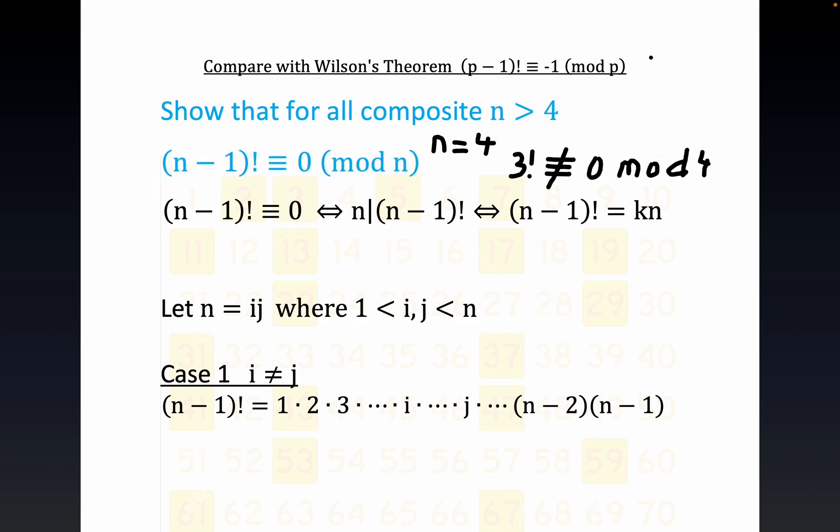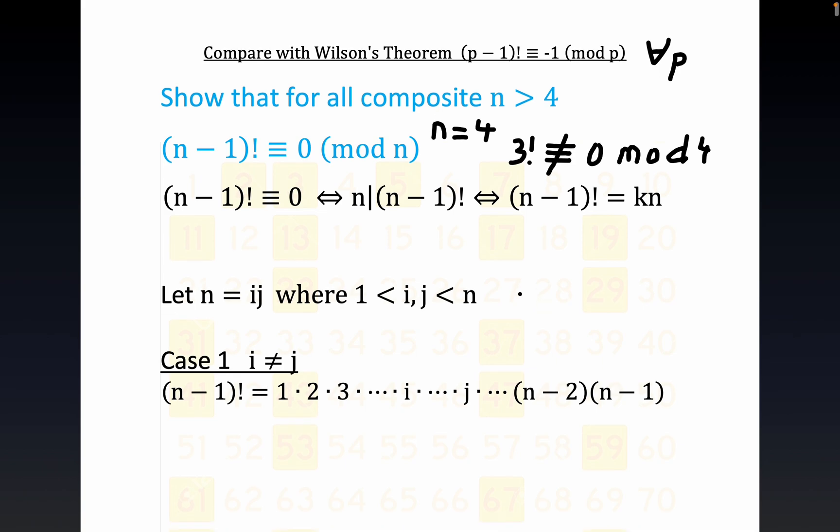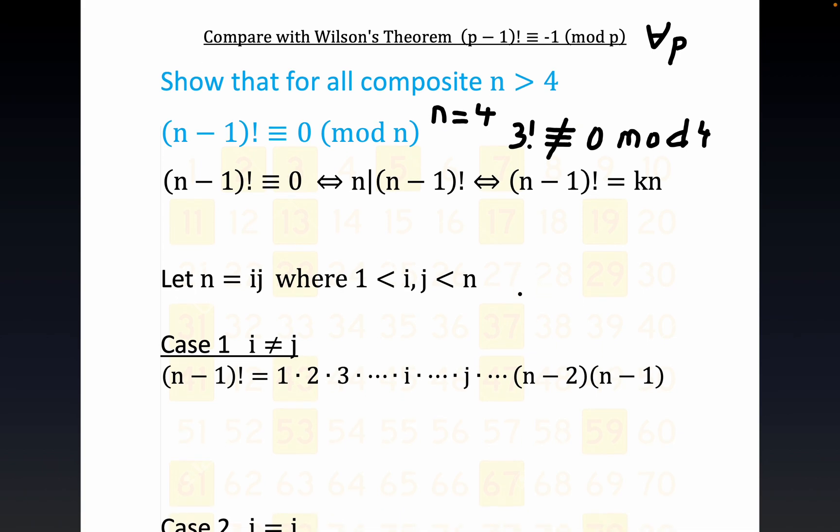And it looks a lot like Wilson's theorem where for all prime p, we have this famous result - a little bit harder to prove, but it's a well-known result from number theory. Now let's go ahead and jump into this and let's take advantage of what the definition of composite means.